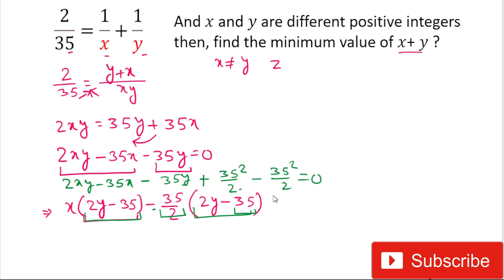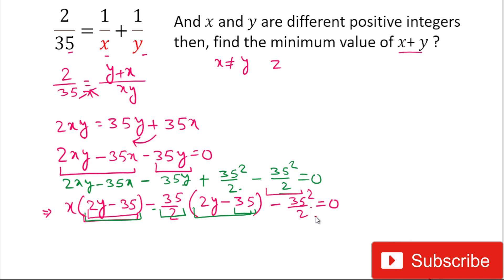Since we have subtracted 35²/2, our equation becomes complete for making the factored form in terms of (2y - 35). The equation now equals zero. Moving ahead, we can take (2y - 35) as a common factor, giving one bracket (2y - 35) and another bracket (x - 35/2).